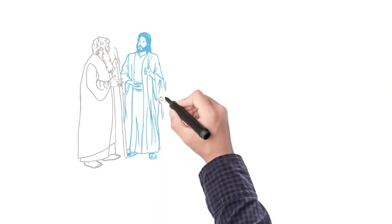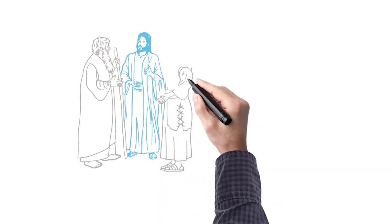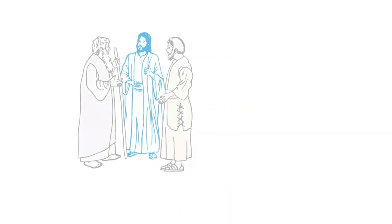In the transfiguration, the disciples observed Jesus speaking with Moses and Elijah. Luke tells us the conversation centered around what would be accomplished in Jerusalem.